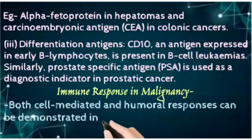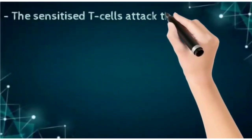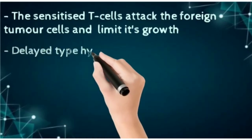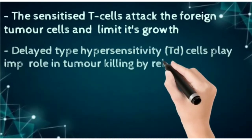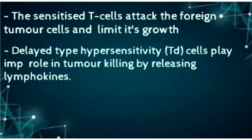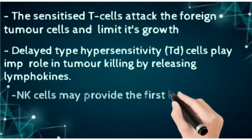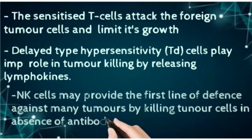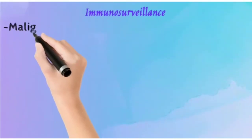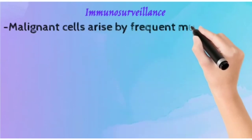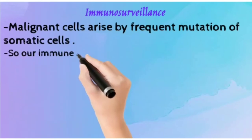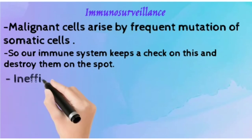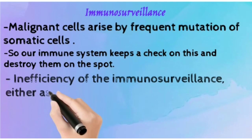Immune response and malignancy: both cell-mediated and humoral responses are demonstrated in malignancy. Sensitized T cells attack foreign tumor cells and reduce their growth. Delayed-type hypersensitivity plays an important role in tumor killing by releasing lymphokines. Natural killer (NK) cells provide the first line of defense against many tumors by killing tumor cells in the absence of antibody. Immunosurveillance: malignant cells arise by frequent mutation of somatic cells, and our immune system regularly keeps a check on this, destroying such malignant cells. Inefficiency of immunosurveillance, such as with aging, may lead to more chances of cancer.